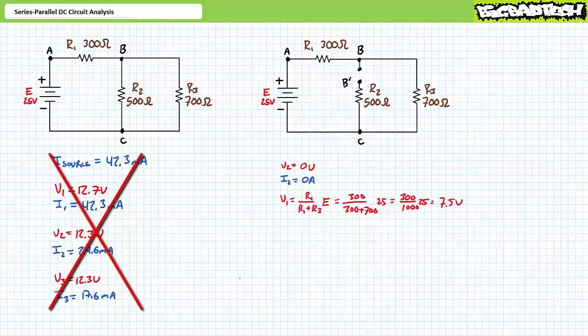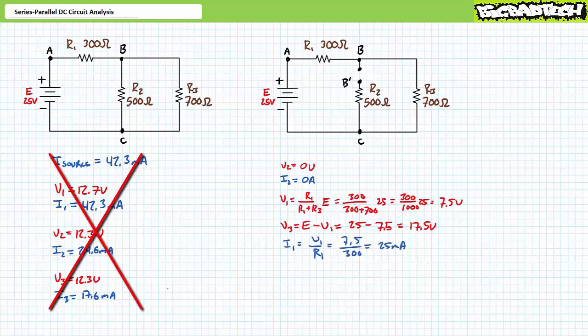No current flows through R2 and no voltage will be dropped across it. An application of the voltage divider rule demonstrates that V1 will be 7.5 volts. An algebraic rearrangement of the Kirchhoff's voltage law equation for this now-series circuit demonstrates that V3 will be the remaining 17.5 volts. An application of Ohm's law demonstrates that I1 will be 25 milliamperes. Given this is now a series circuit, source current and I3 will also equal 25 milliamperes. Again, the opening of R2 has fundamentally changed the nature of the series-parallel circuit and all previous analysis is invalid.